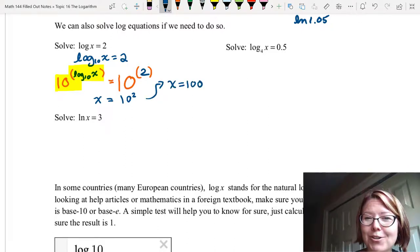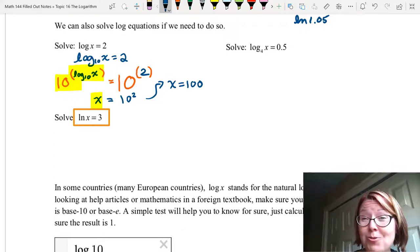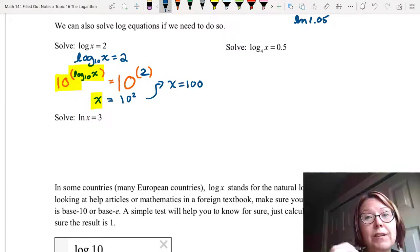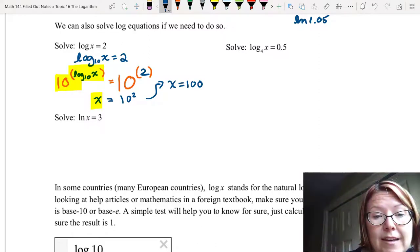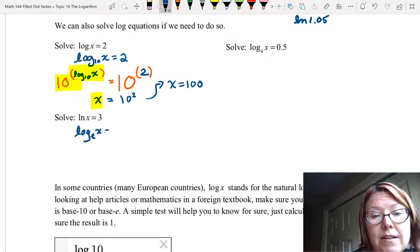Next, we'll solve natural log of x equals 3. If you remember, natural log of x is really a log with a base e. And if it helps, you can rewrite it that way. You can rewrite this as log base e of x equals 3. That makes it a little easier to see how to undo this log function.